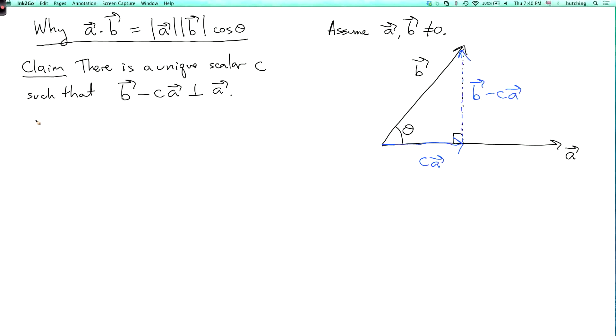So I claim there's a unique c that makes that work. So the proof of this claim is let's solve for c. So I have b minus c a dot a equals zero. That's what it means for these two vectors to be perpendicular.